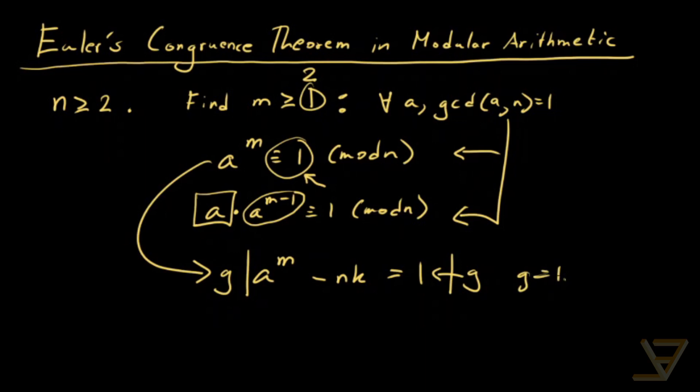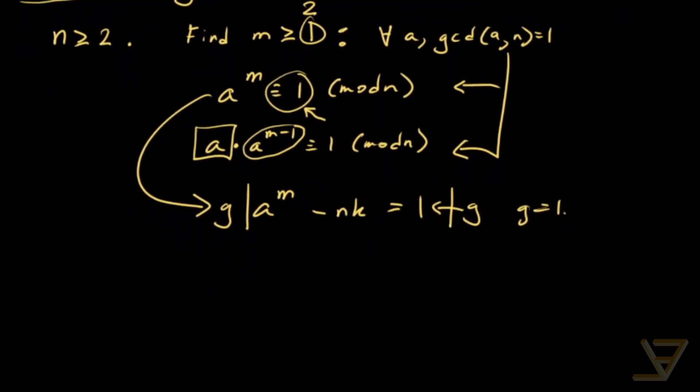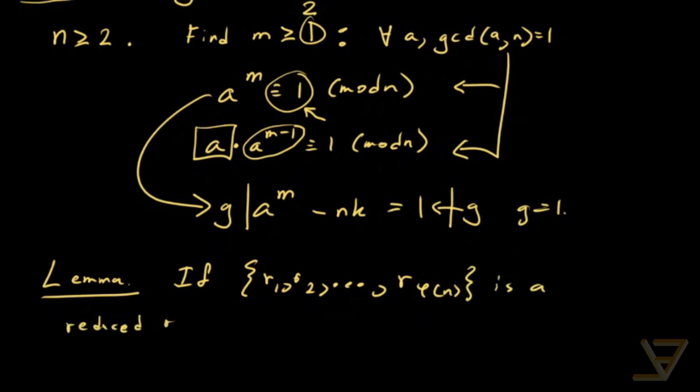So without further ado, let's move into the proof or rather exploration of the idea that's going to lead to the proof. Let's start with a lemma. We need the fact that if r1, r2, all the way through to r phi of n is a reduced residue system,